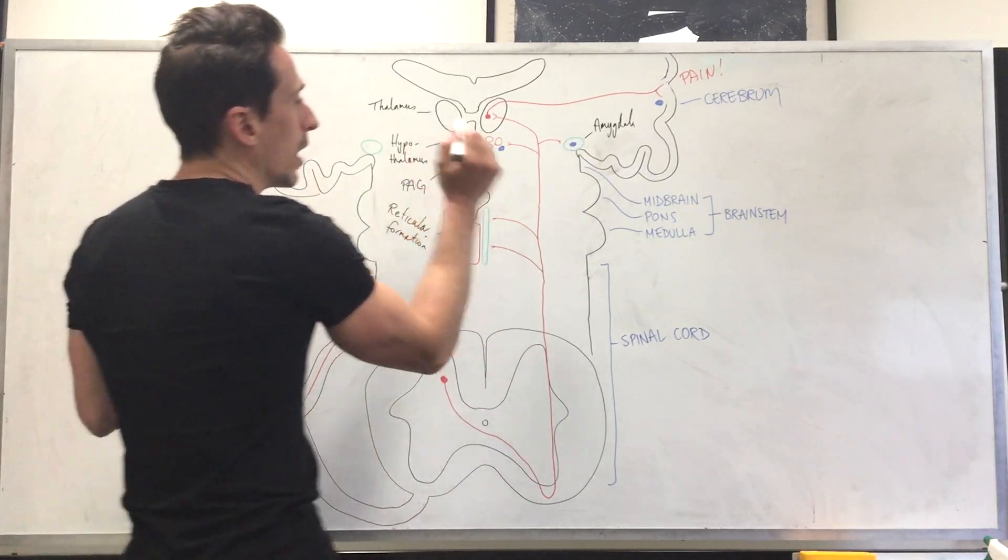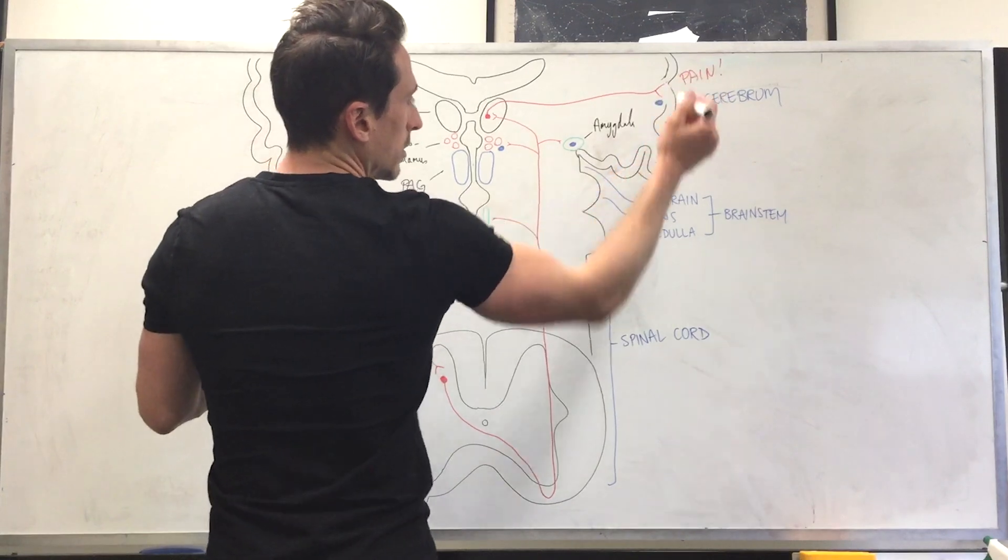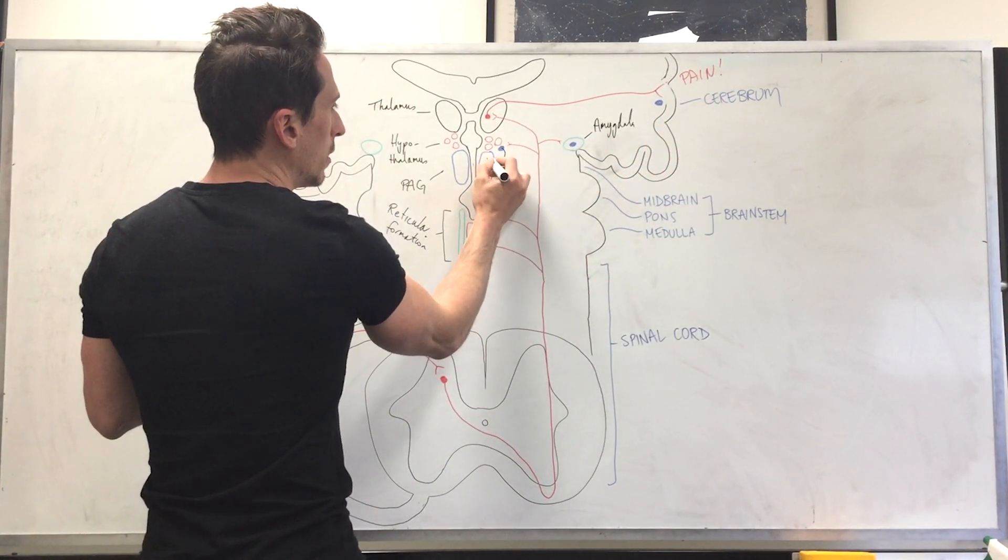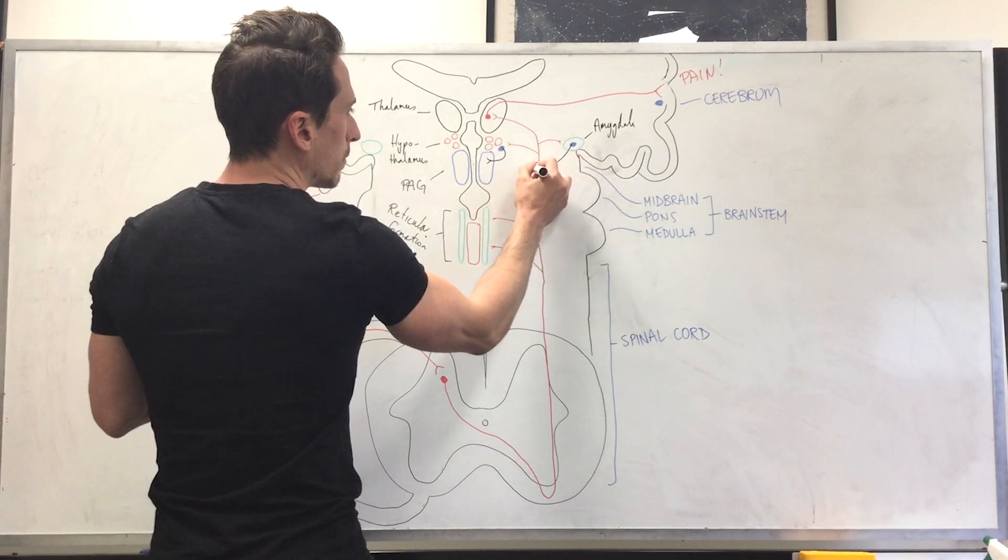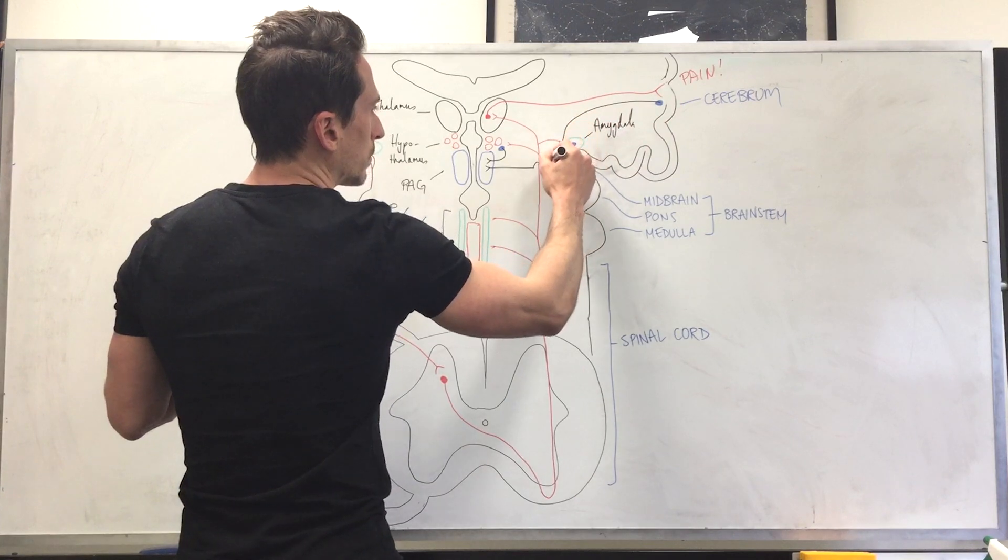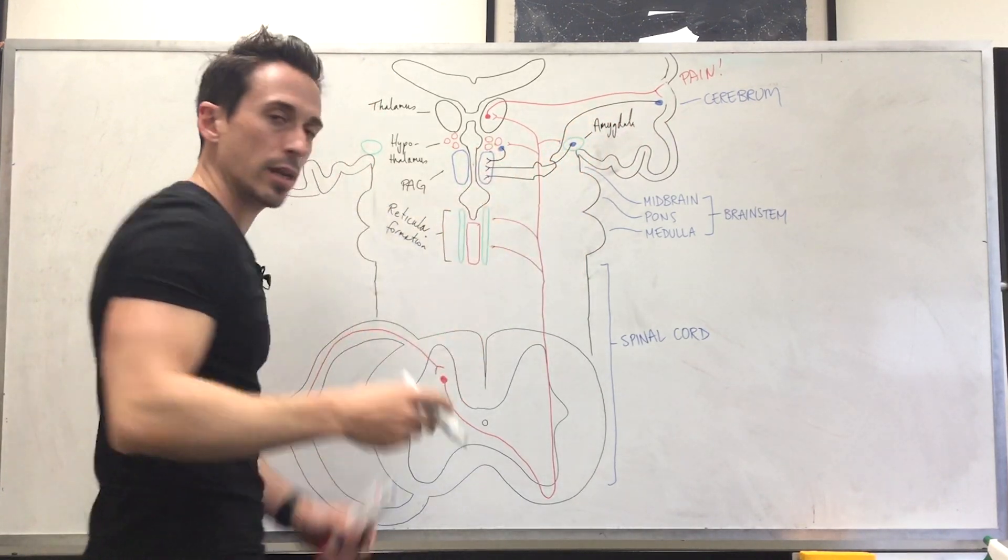Now, all of these areas, the cerebral cortex, the amygdala, the hypothalamus, will all send these signals to the periaqueductal grey matter and stimulate it. It stimulates the periaqueductal grey matter to then speak to this area here, part of the reticular formation.